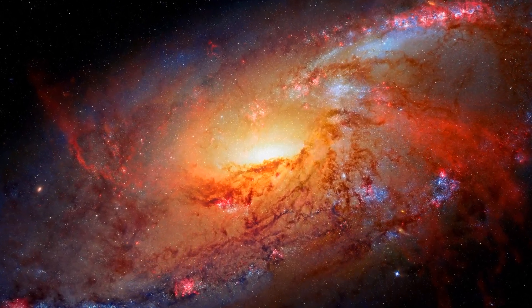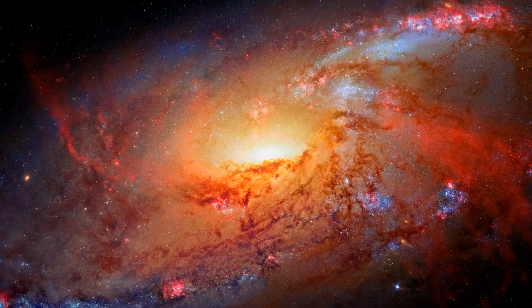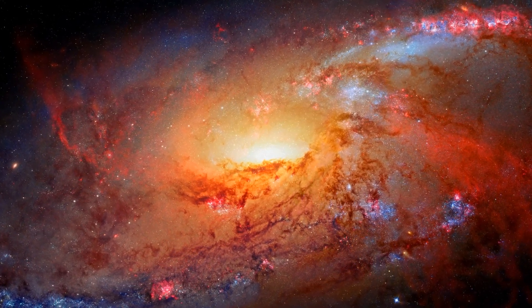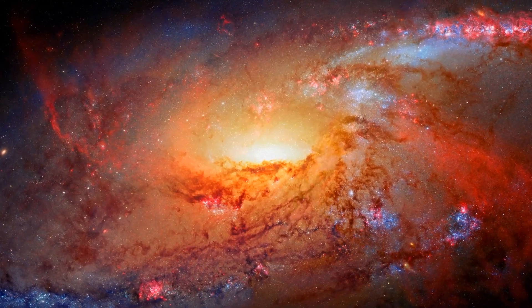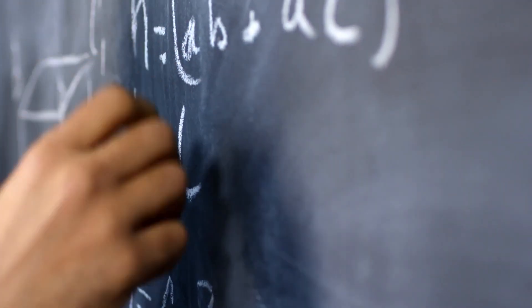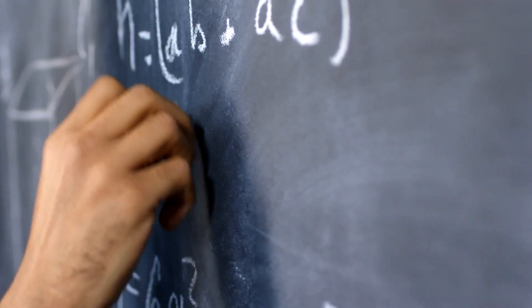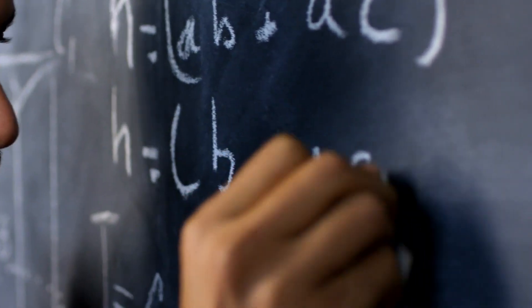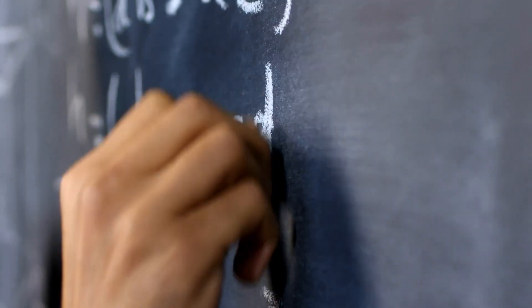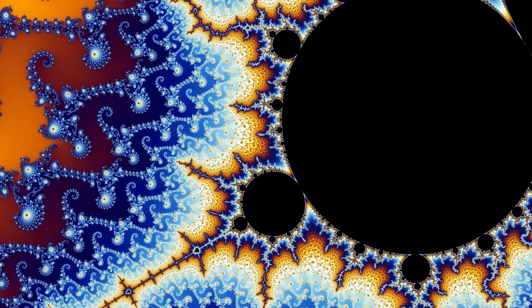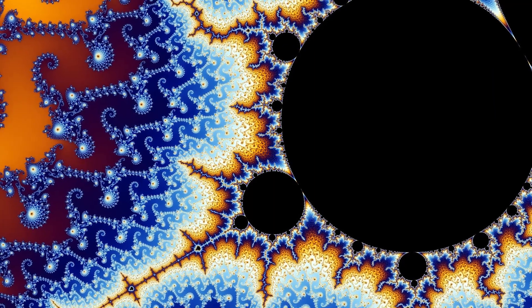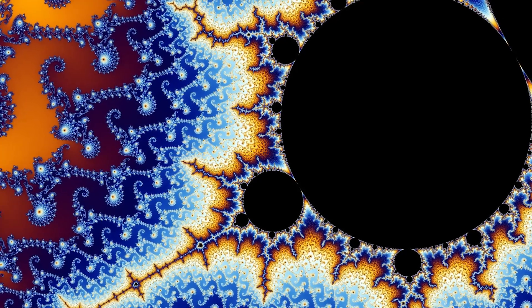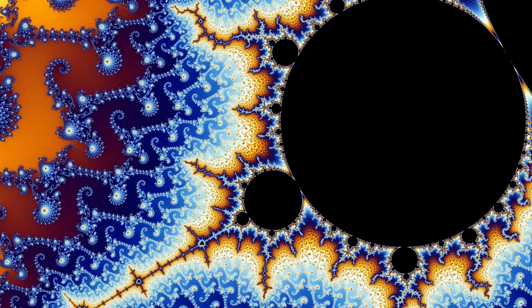Enter the Mandelbrot set, a fascinating mathematical concept discovered by Benoit Mandelbrot in the late 1970s. At its core, the Mandelbrot set is formed by iteratively applying a small equation to a complex number and checking if the result remains bounded or not. The result is a beautiful and intricate fractal pattern that appears to go on forever, displaying self-similarity at different scales.